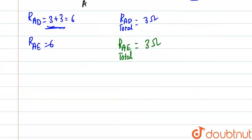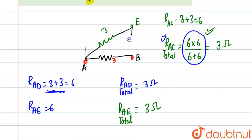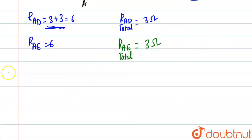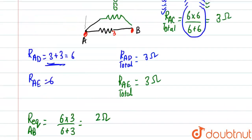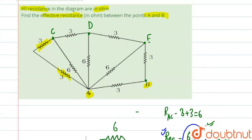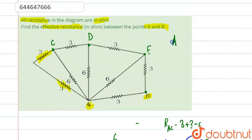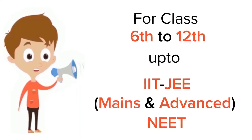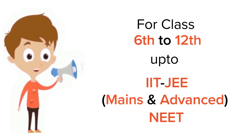This 3 ohm and 3 ohm are again connected in series, giving simply a 6 ohm resistor — the shortest reduced circuit. Finally, R_equivalent AB equals 6 into 3 divided by 6 plus 3, which equals 2 ohms. So our answer is 2 ohms. This is how we reduce the circuit step by step to find the effective resistance.